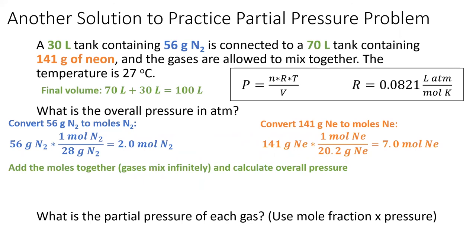The second way to solve this problem actually calculates overall pressure first. We'll add the moles of each gas together since we know that they can mix in any proportion. This gives us 9 moles of gas total.